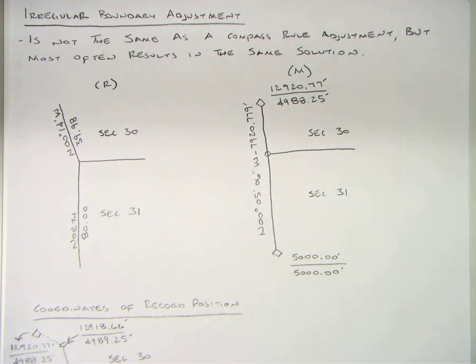The last method we're going to take a look at is the irregular boundary adjustment and it's used whenever you have a lost corner that would generally be a single proportion however there's a bearing break in the line.